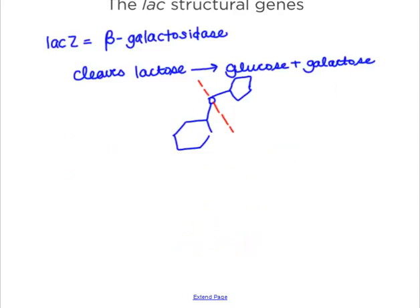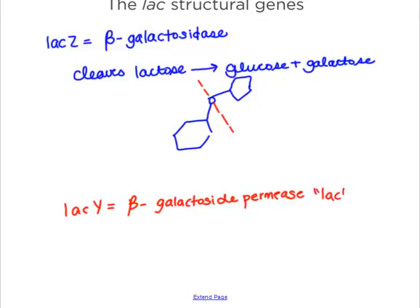The next structural gene is lacY, and that encodes for beta-galactosidase permease, also known as lactose permease. This is the enzyme that goes to the cell membrane and actually transports lactose into the cell.